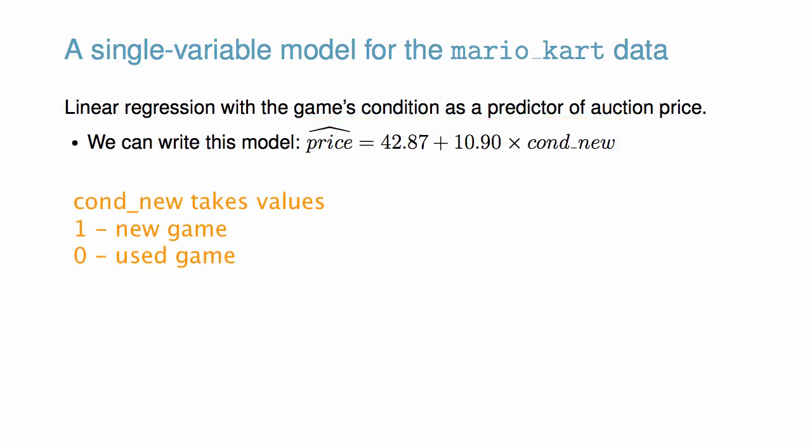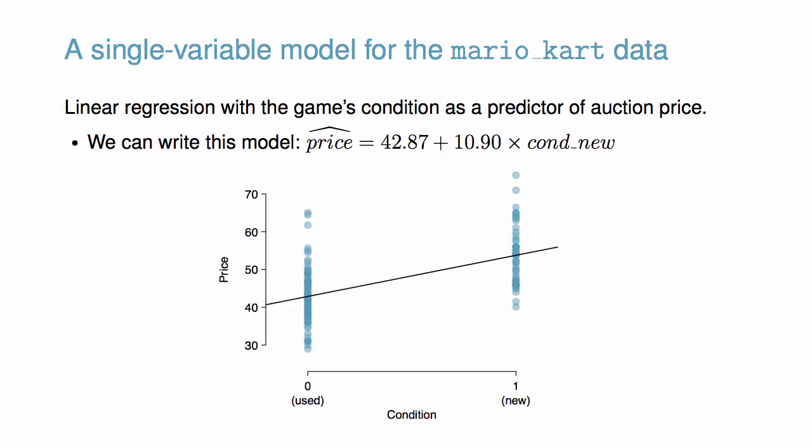Cond_new is a variable that equals 1 when the game is in new condition and 0 when it is used. Here we see a scatter plot of the total auction price against the game's condition along with the least squares line. Notice our model predicts an extra $10.90 for those games that are new versus those that are used.